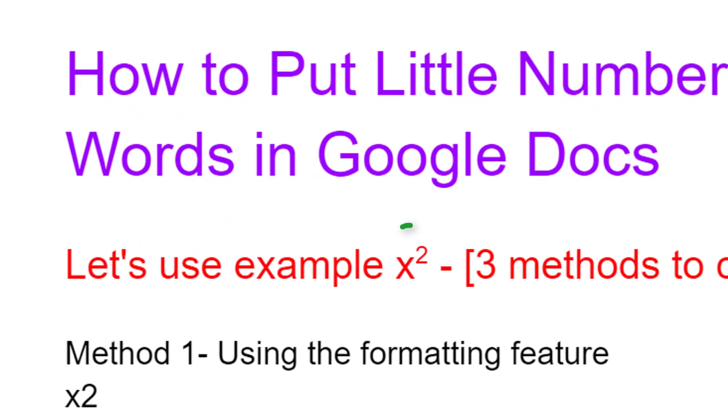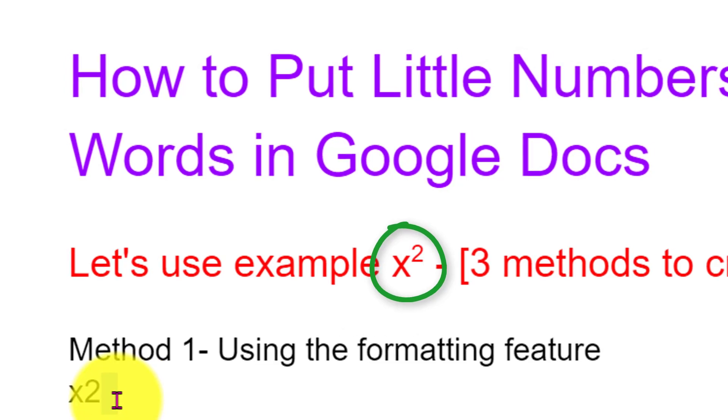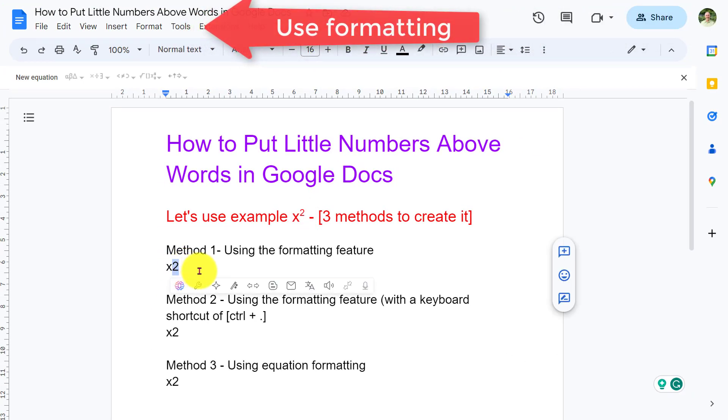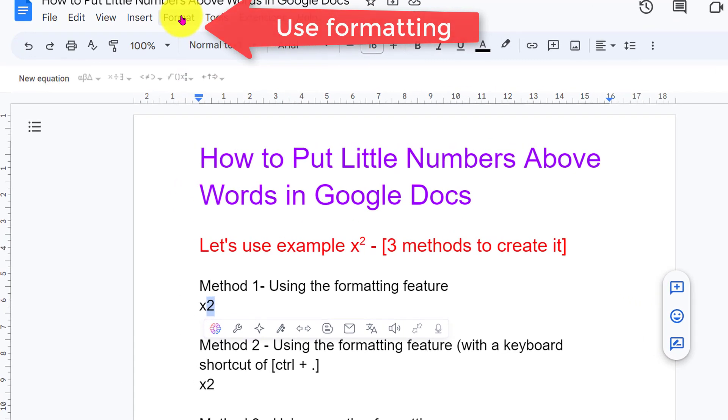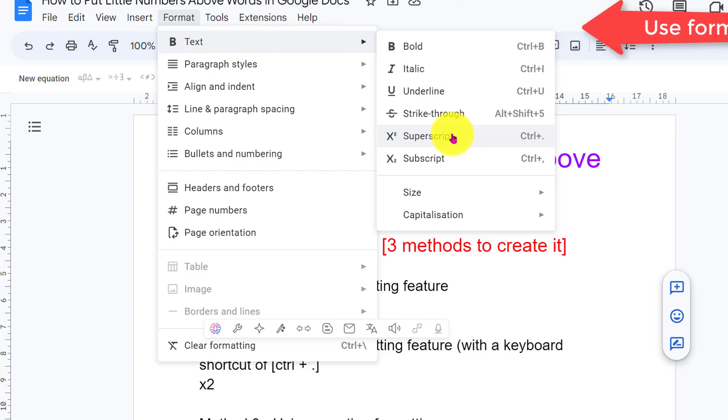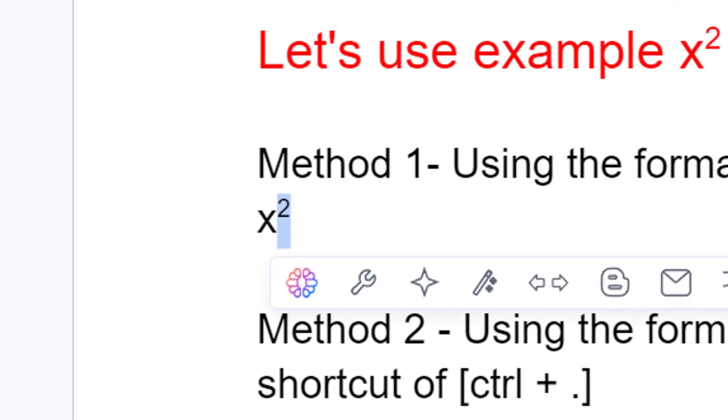You can put little numbers above words in Google Docs in three ways. The first way is using the formatting feature. Highlight the two and go up to Format, Text, and across to Superscript. There's the two as a little number above the X.